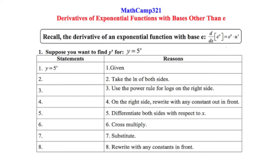To start, let's recall that the derivative of an exponential function with base e would be the following: the derivative of e to the u would be e to the u times u prime. So let's take a look at the next problem and see how, if the base is not e, that's going to be a little bit different.